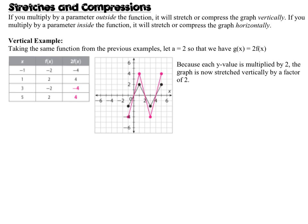Here I've taken the same example and now I've got 2 f of x, so I'm multiplying on the outside and multiplying each y value by 2. I've doubled each y value in my chart. When we plot that — the pink is the graph — it's not shifted up 2. The positives are higher by 2, but the negatives are lower by 2. So the whole thing has become stretched vertically by a factor of 2 — basically, it's twice as tall as it was before.